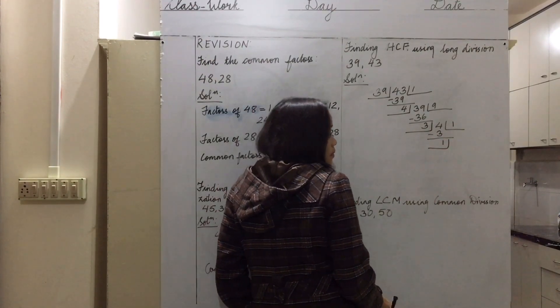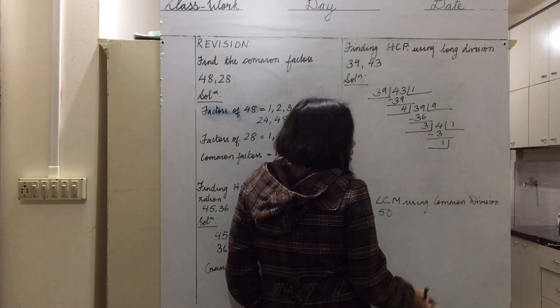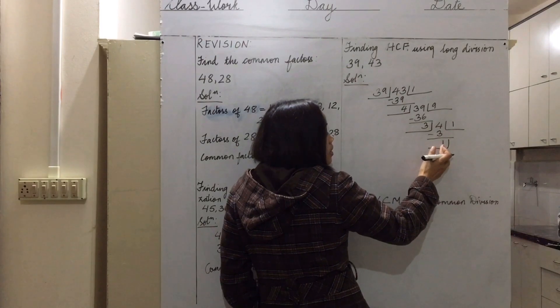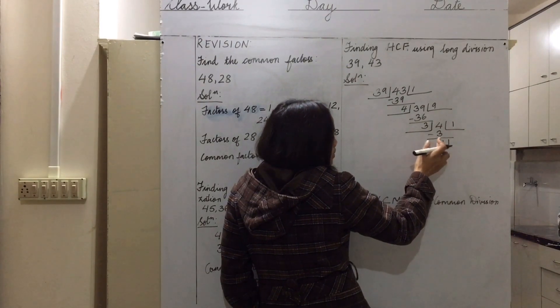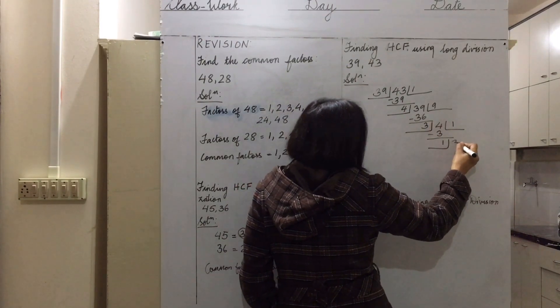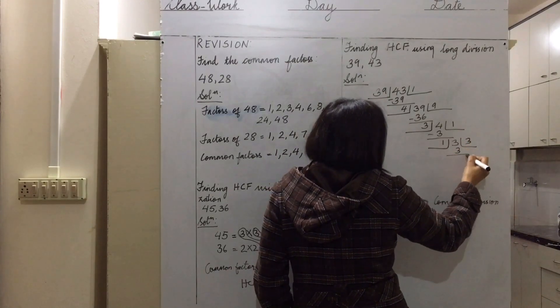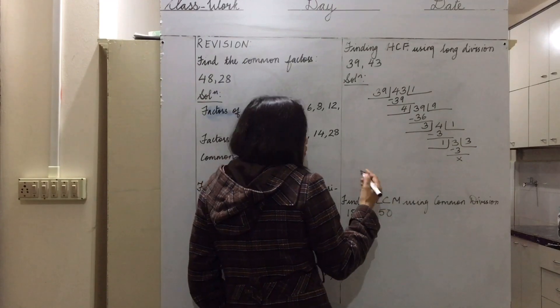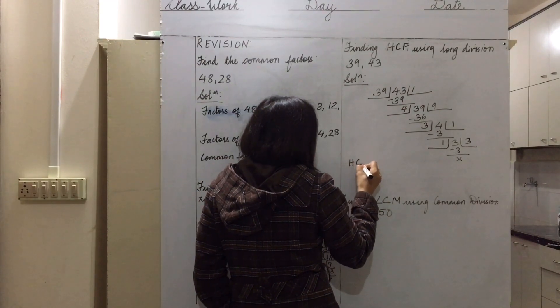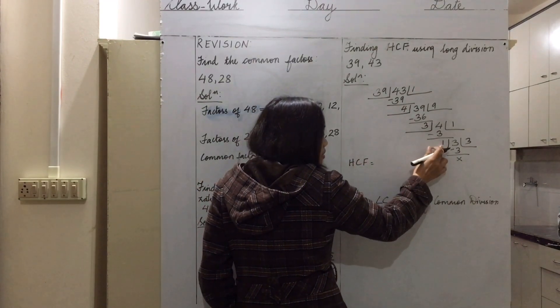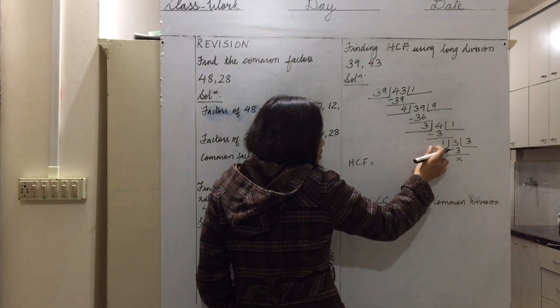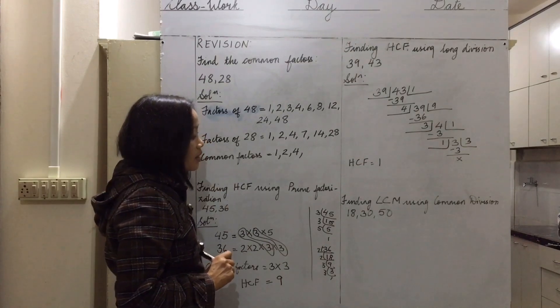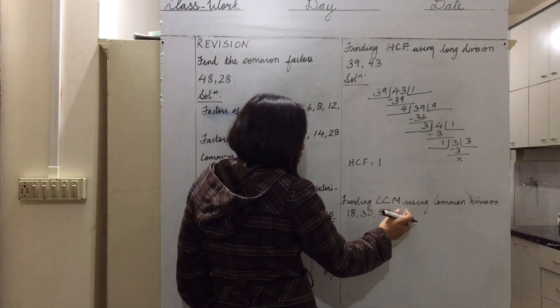Four will act as the divisor again and divide the previous divisor 39. Four times 9 is 36, we subtract and get 3. Then 3 divides 4, remainder 1. We keep dividing until we get 0. The HCF is the last divisor, which is 1.